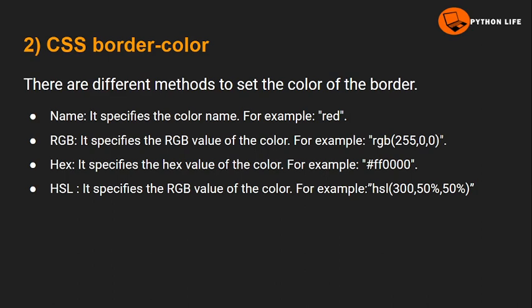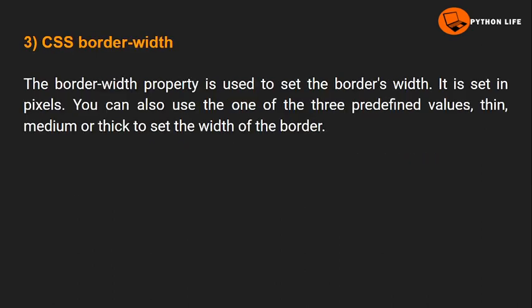These are the different types of CSS border color values. The second property is CSS border-color. The third property is CSS border-width. The border-width property is used to set the border's width, which can be specified in pixels.